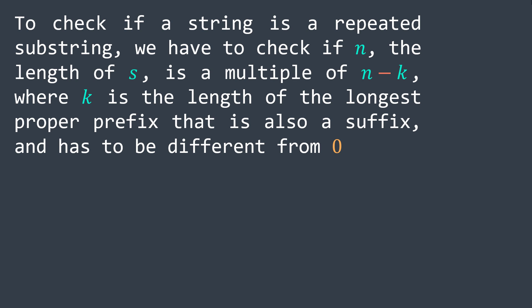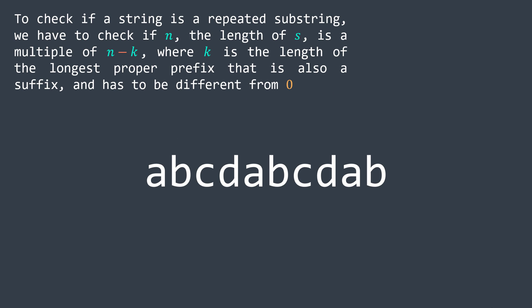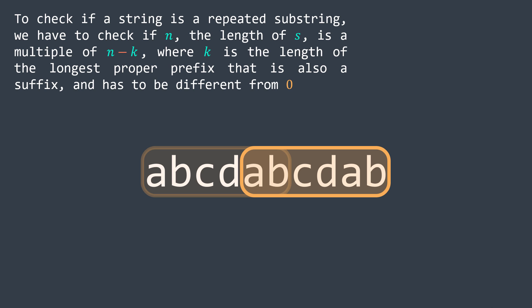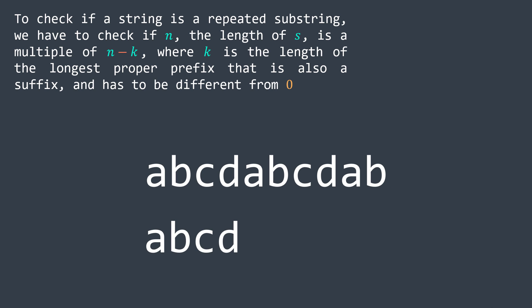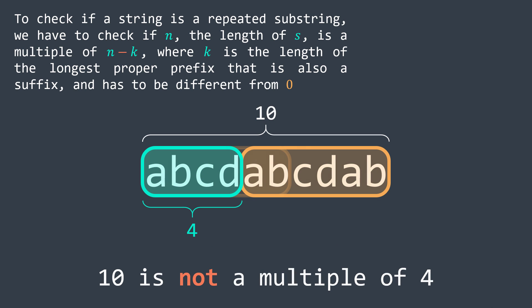You might ask why this works. If we take the substring before the longest proper suffix that is also a prefix and keep repeating it, at some point we reach the end of the string. For example, the longest proper suffix that is also a prefix of ABCDABABCDAB is ABCDAB, and the substring before it is ABCD. Repeating ABCD, we reach the end of the string — but they don't match here because the length of s (10) is not a multiple of 4. So after finding the longest proper prefix suffix, we subtract its length from n, and n must be a multiple of that result.